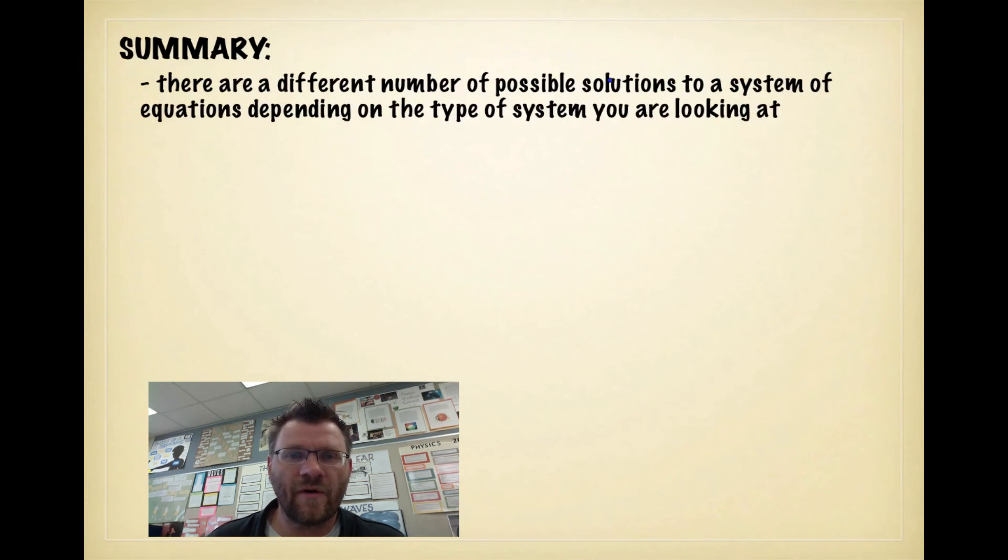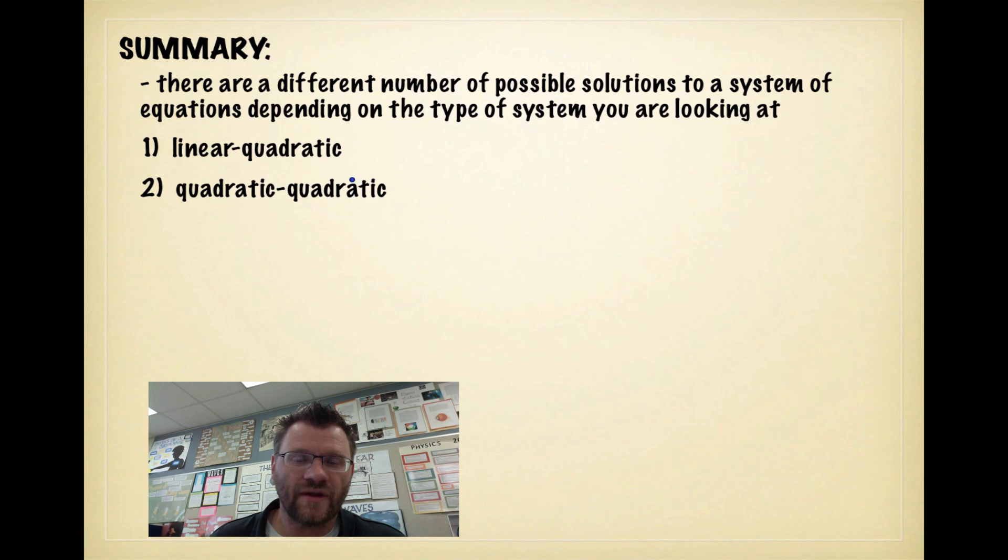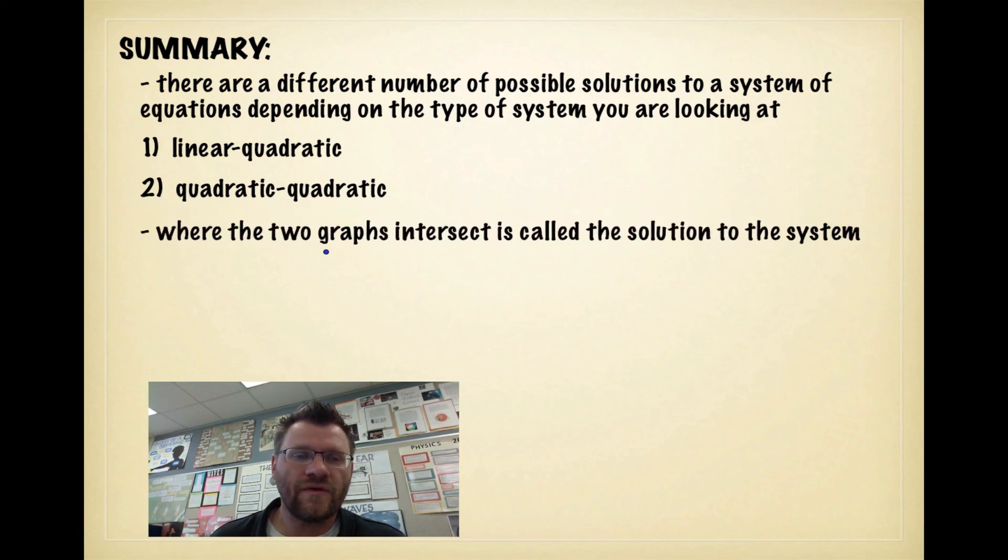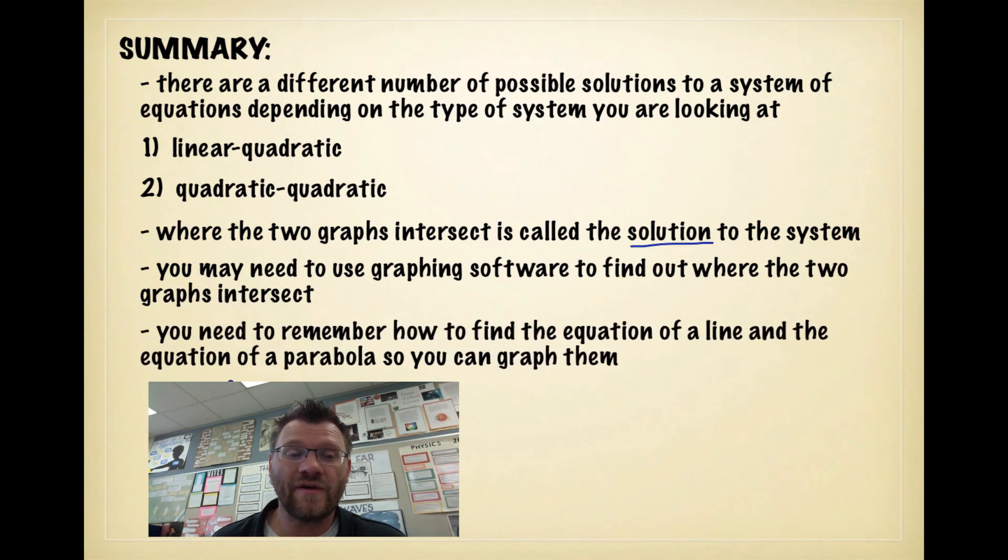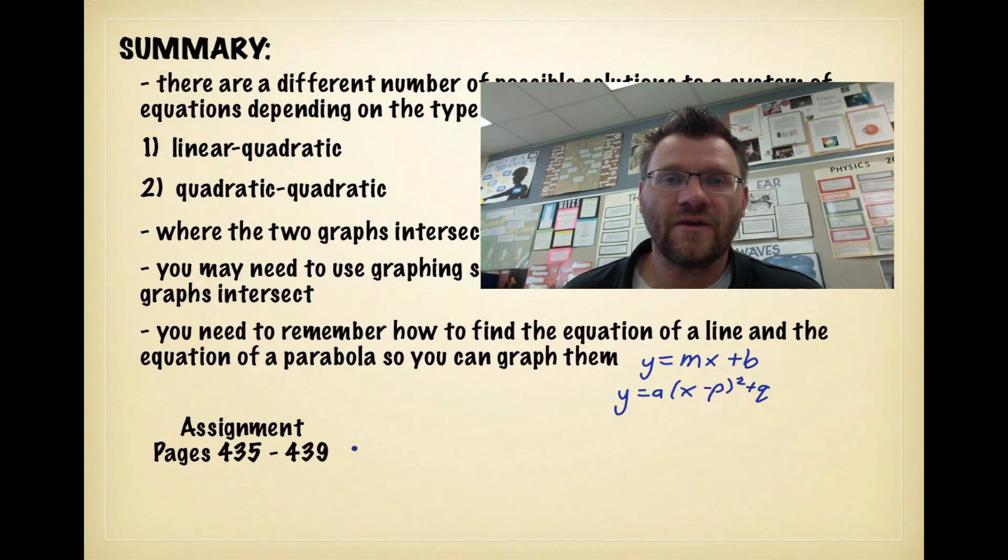So in summary, there are a different number of possible solutions to a system of equations depending on the type of system that you're looking at. You could have a linear-quadratic, which is just a line and parabola, or you could have a quadratic and quadratic. Depending on how these shapes are orientated on your graph, you might have 0, 1, or 2 solutions. Where the two graphs intersect is what we call the solution. So that's just where they cross. And you may need to use graphing software to find out where those two graphs intersect. It's usually easier than trying to do it by hand because drawing lines by hand is pretty easy, but drawing parabolas accurately by hand is a little bit harder. You need to remember how to find the equation of a line and the equation of a parabola so you can graph them. Remember that lines are usually best found by using y equals mx plus b, and parabolas, like we just found out, y equals a(x minus p) squared plus q, where p and q are your vertex and a is just that number in front that determines how wide or how narrow that parabola is. So your assignment is on pages 435 to 439. Good luck and we'll see you in class.